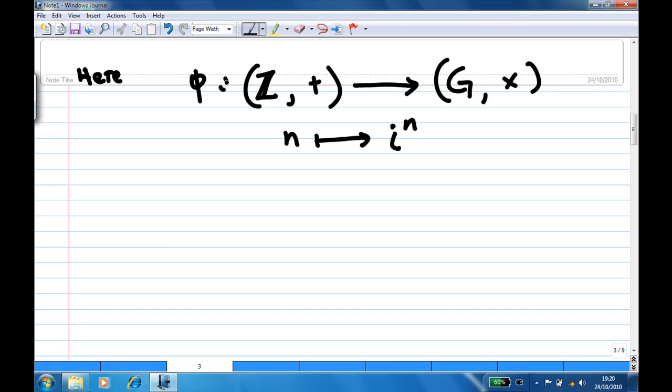let's take two elements in Z. So let m, n belong to Z, the group of integers under addition. Then we can add them, so m + n is an integer also, and we can find the image of this sum.